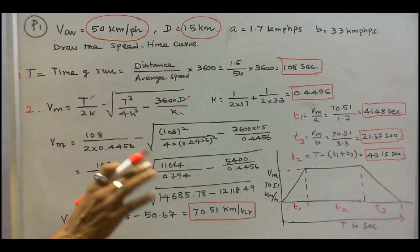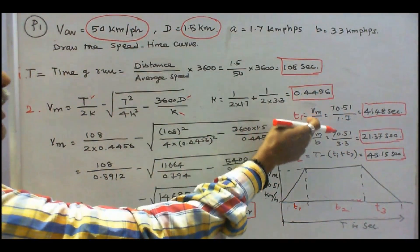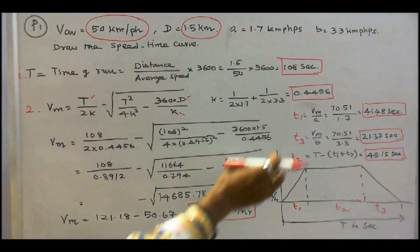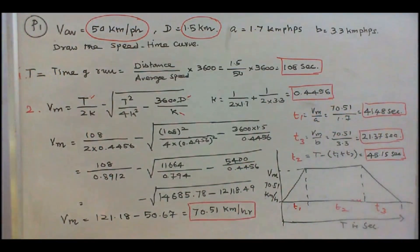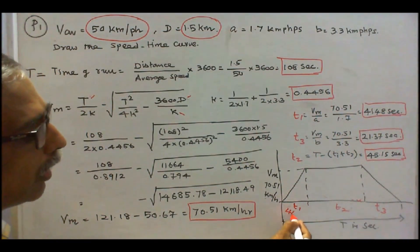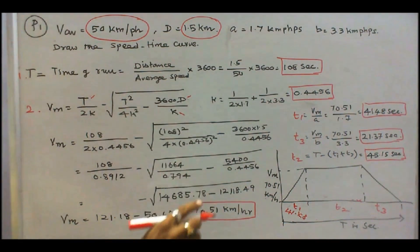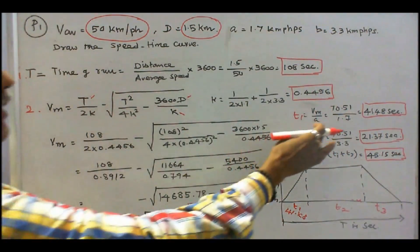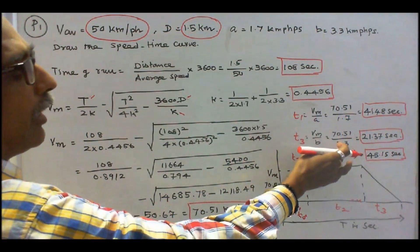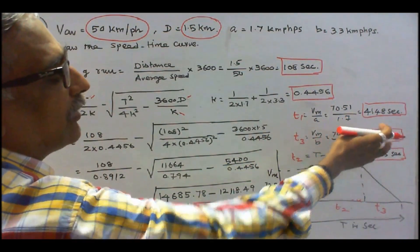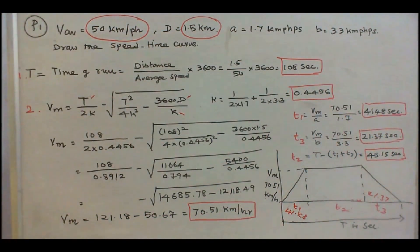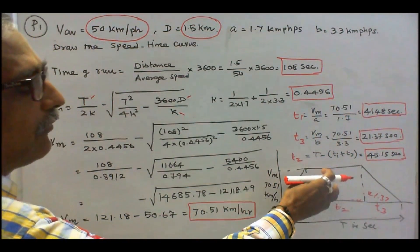We can find t1, the accelerating or notching period: t1 equals vm divided by a, that is 70.51 divided by 1.7, which equals 41.48 seconds. Next, we find the braking period t3: t3 equals vm divided by b, that is 70.51 divided by 3.3, which equals 21.37 seconds.